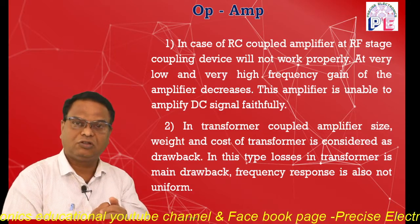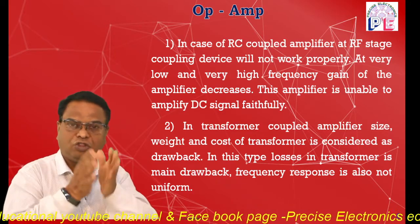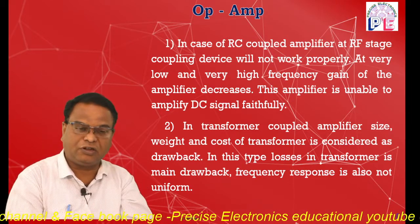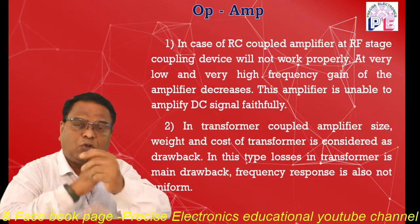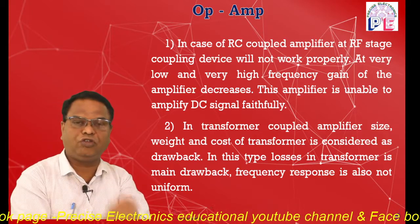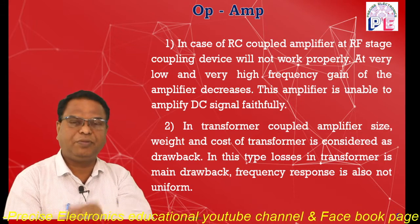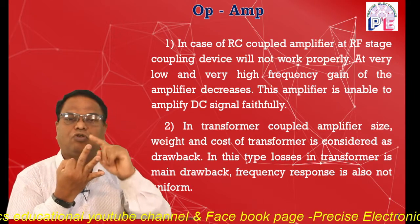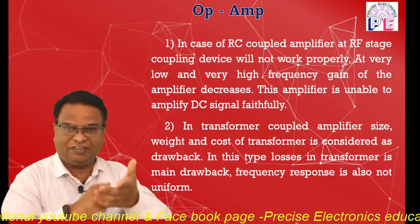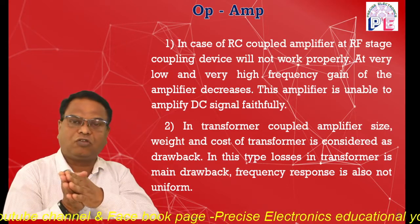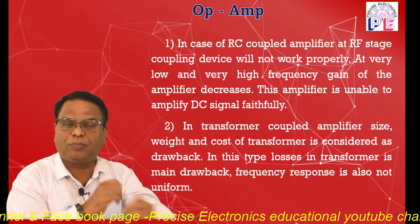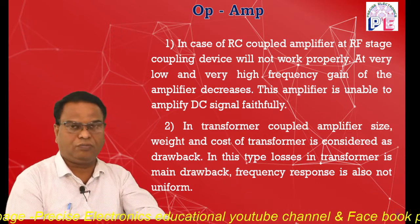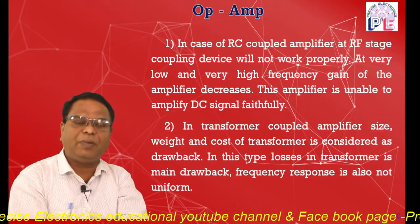Another main drawback of transformer coupled amplifiers is losses and leakages in the transformer — there are two types: copper loss and core loss. Due to these losses, the output signal is less than the input signal. The frequency response of the transformer coupled amplifier is also not uniform, meaning the output signal also varies. These are the drawbacks: increased size, weight, cost, losses, and non-uniform frequency response.